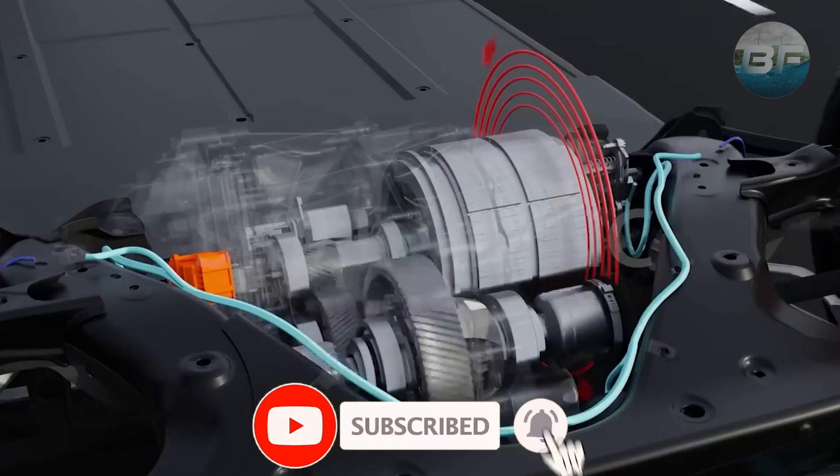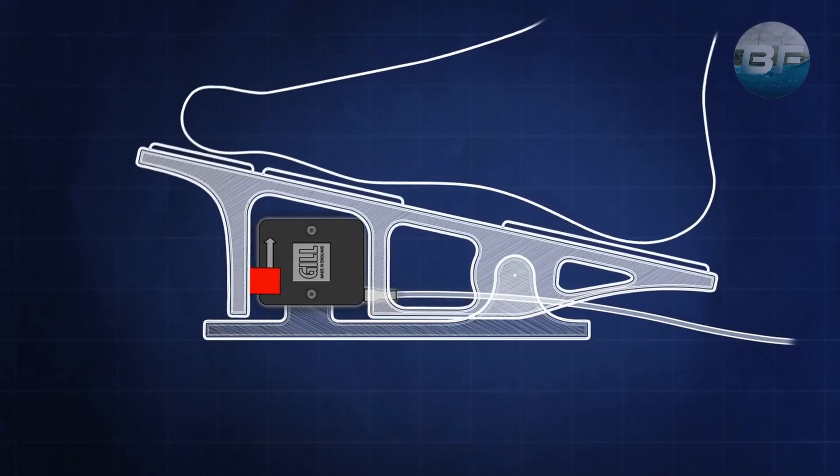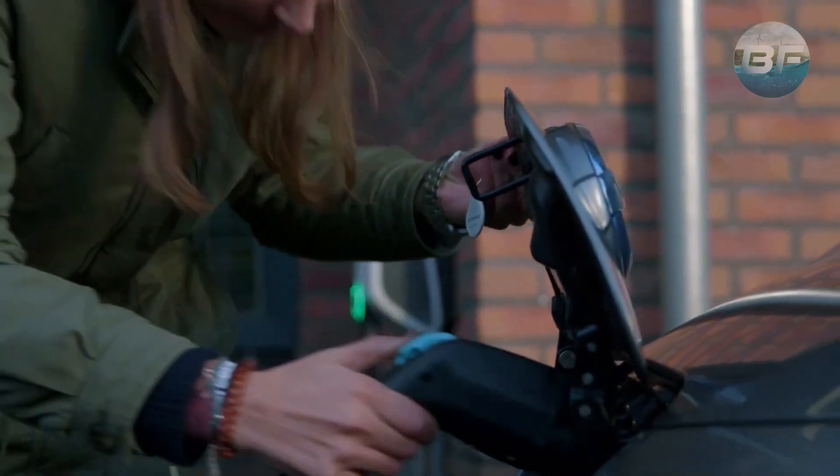The motor receives power from a controller, which manages the amount of energy based on how much the driver presses down on the accelerator pedal. These vehicles use rechargeable batteries that store energy and can be charged using regular household electricity.